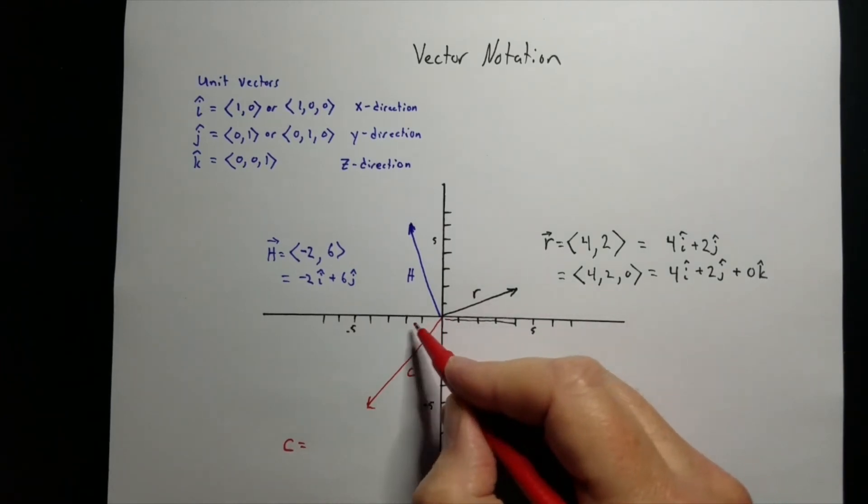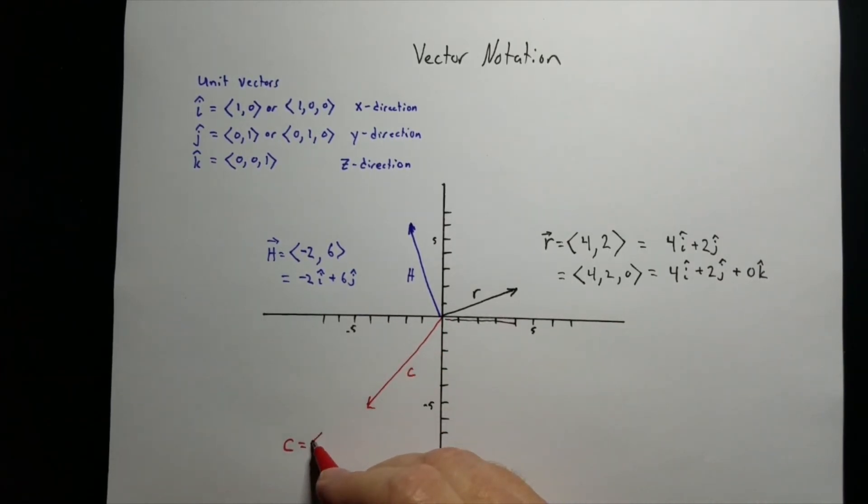So negative 4. And we're down 5, negative 5. It would look like that.